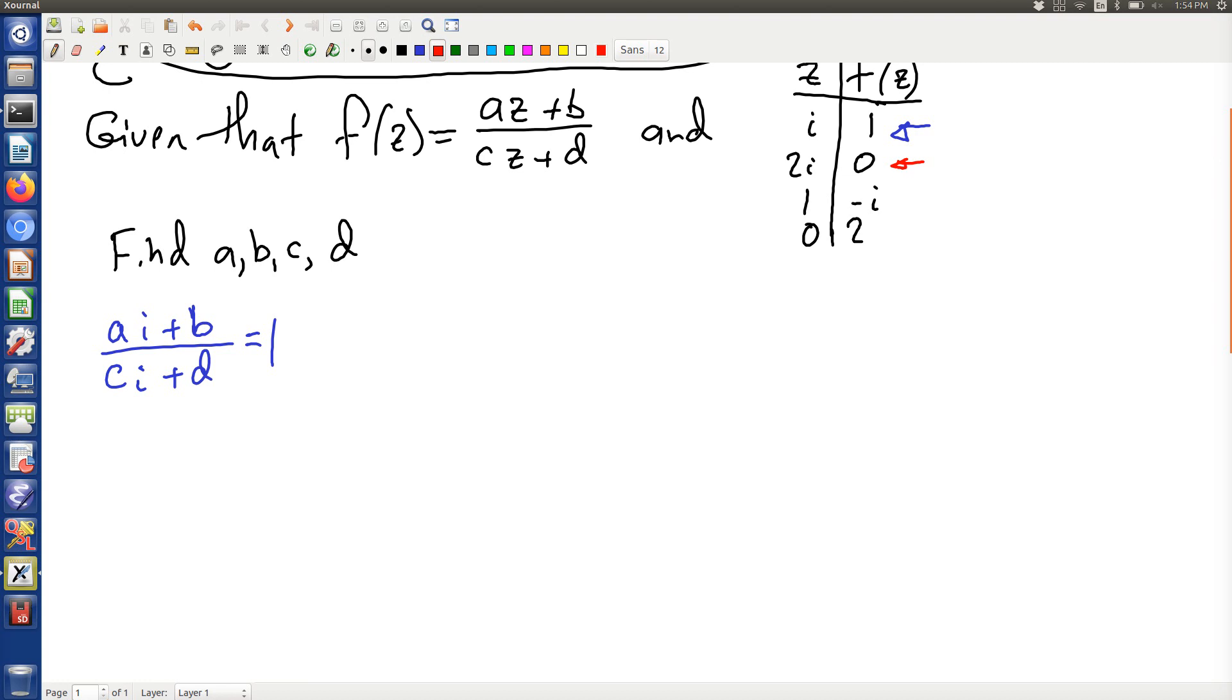There's the second point, A times 2i plus B over C times 2i plus D. That's got to equal 0.